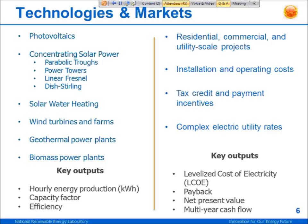On the financing side, SAM can model projects for residential, commercial, and utility-scale applications. There are basically two types of financial models. The residential and commercial models are for projects on the customer side of a utility meter, and the utility models are for projects on the utility side of a meter. Residential and commercial projects buy and sell power at retail rates, while utility projects sell power at a price negotiated through a power purchase agreement. SAM doesn't really care about the size — you can model as large a residential project or as small a utility project as you want.